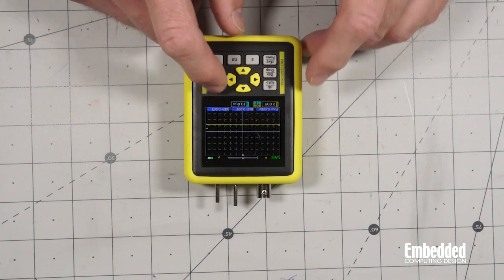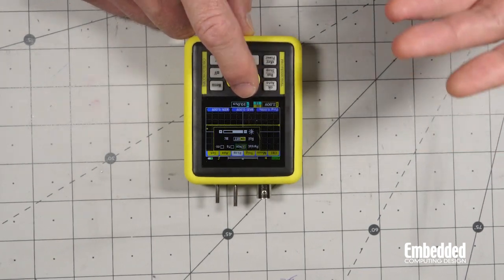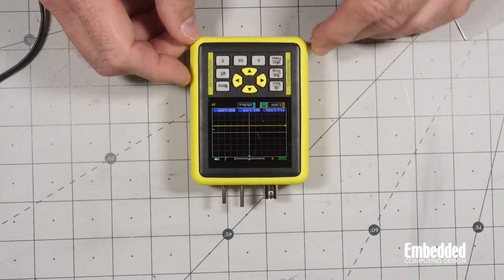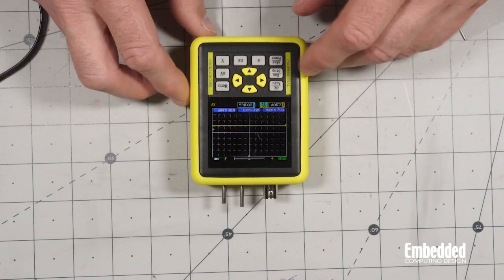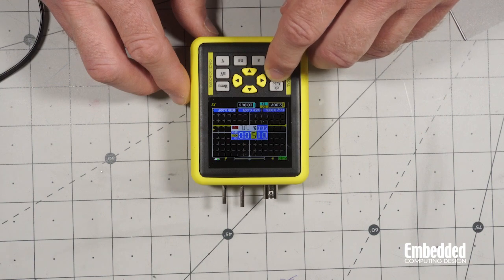And if you go back into menu, you have measure, trigger, display with different options for that, auxiliary, set, and that looks good there. Another thing that's secret slash in the manual, if you hit run slash stop, you can actually do a signal generator.